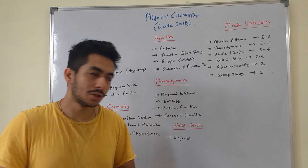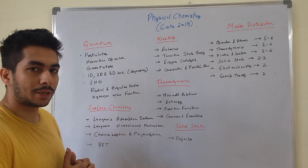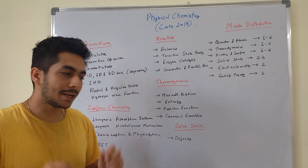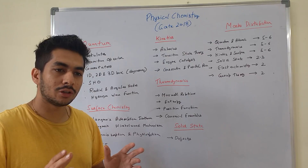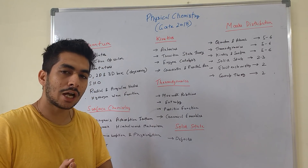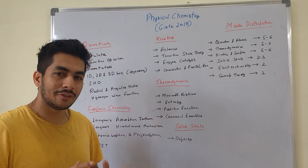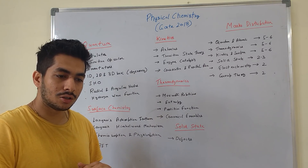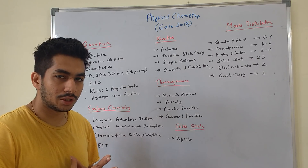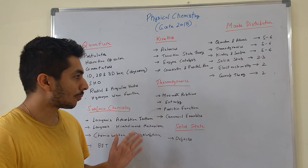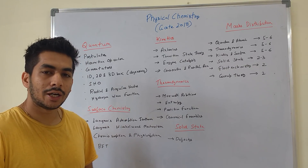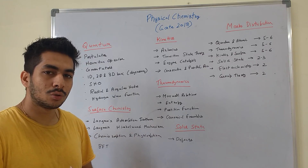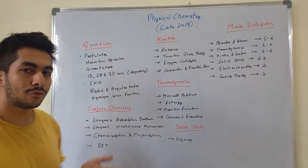Let's get back to what you have to study in physical chemistry. The best part about GATE is that you don't have to go through many topics, unlike NET where you had to mug up each and everything. In GATE, specific topics show up every time, so you have to focus on those topics only. From the last five to six years these topics have been asked time and again.